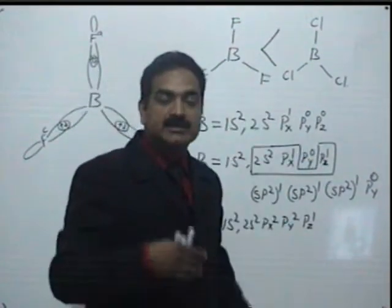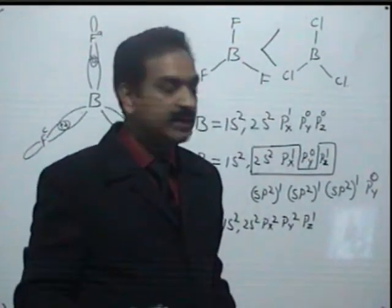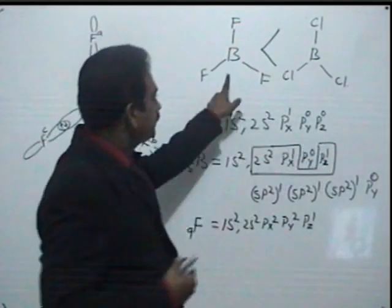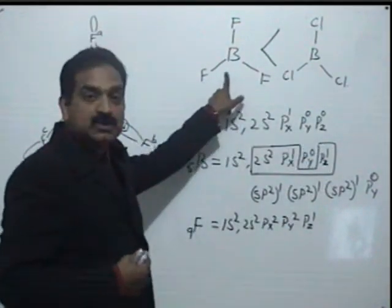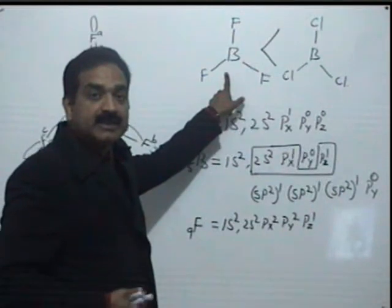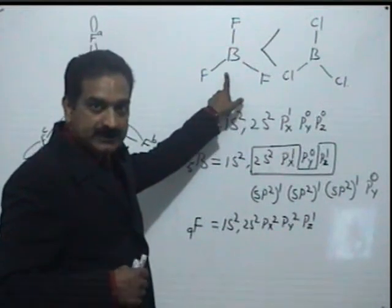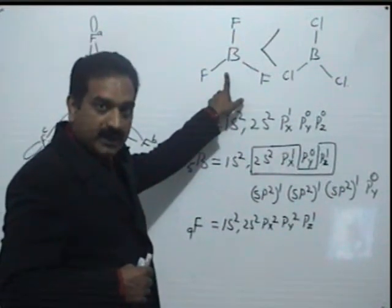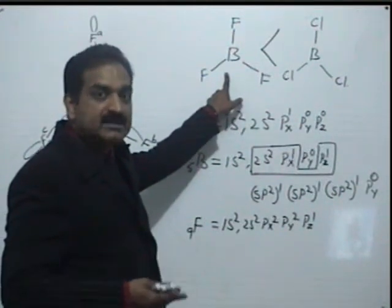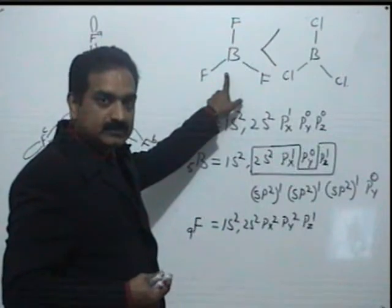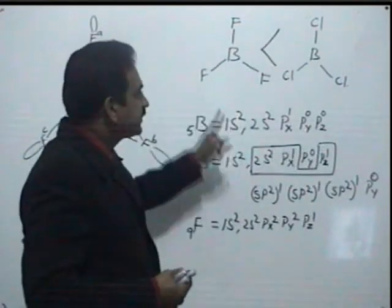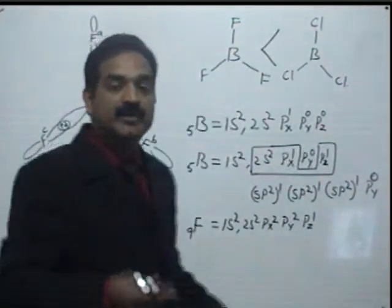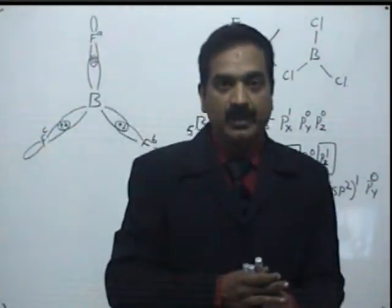Whereas, in practice, it is observed that BF3 is not a stronger acid — rather it is a weaker acid. BF3 is a weaker acid, which can be explained on the basis of back bonding.